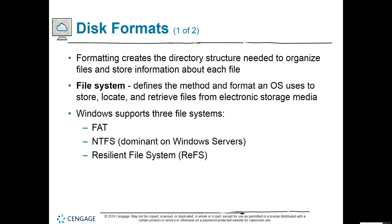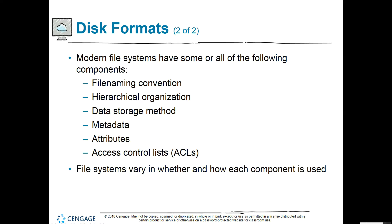Formatting creates the directory structure needed to organize files and store information about each file. The file system defines the method and format an operating system uses to store, locate, and retrieve files from storage media. Windows Server 2016 supports three file systems: FAT and FAT32, NTFS — the dominant one on Windows servers — and the newer Resilient File System or ReFS. Modern file systems have components including a file naming convention, hierarchical organization, storage method, metadata, attributes, and access control lists or ACLs.